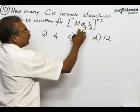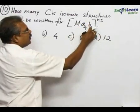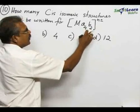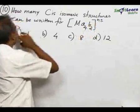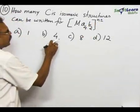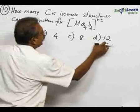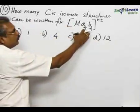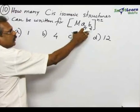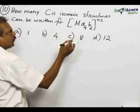So A type ligand four items and B type ligand two numbers. In total here the coordination number is six and the options given are A1, B4, C8 and D12. And this type of complexes MA4B2 exhibit geometrical isomerism that is cis trans isomerism.